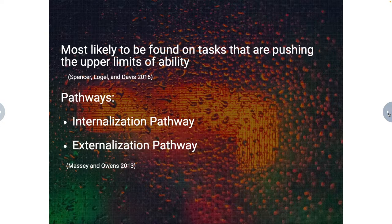There are two pathways to understand. In the internalization pathway, the individual first internalizes the stereotype, and then they don't work as hard because they feel that way they will not confirm the stereotype — since they never work to their full capacity. The externalization pathway happens when someone already expects others to hold negative stereotypes and make judgments about them, and they develop anxiety about performing badly in front of those who have those judgments. That creates a performance burden, which then undermines their achievement.